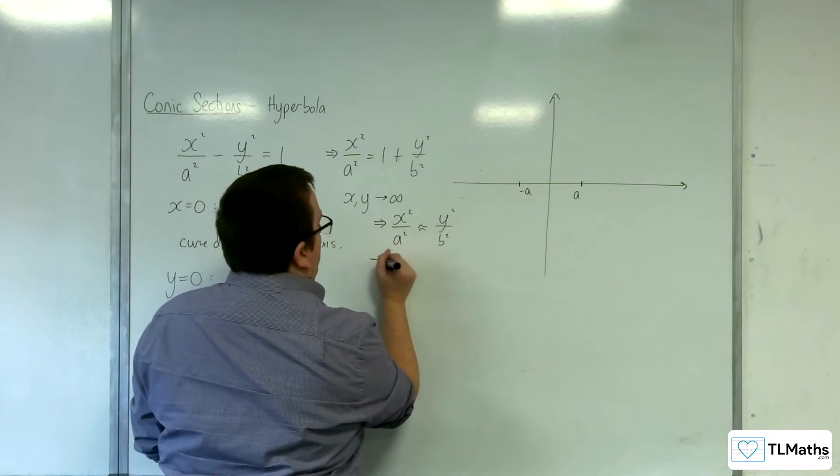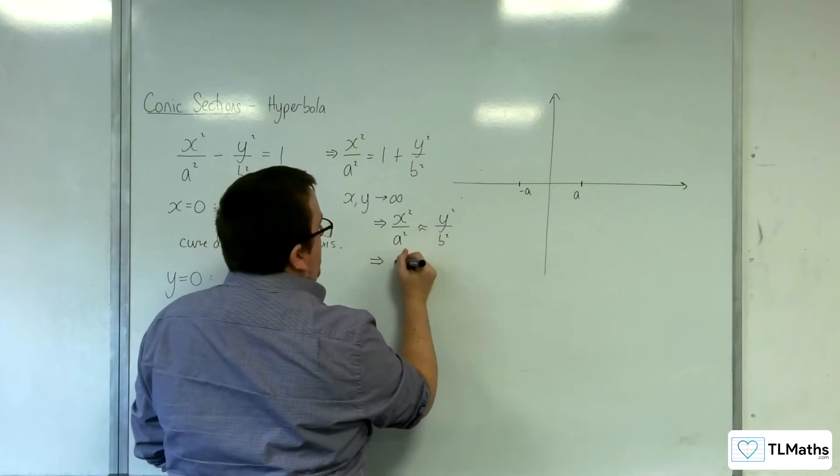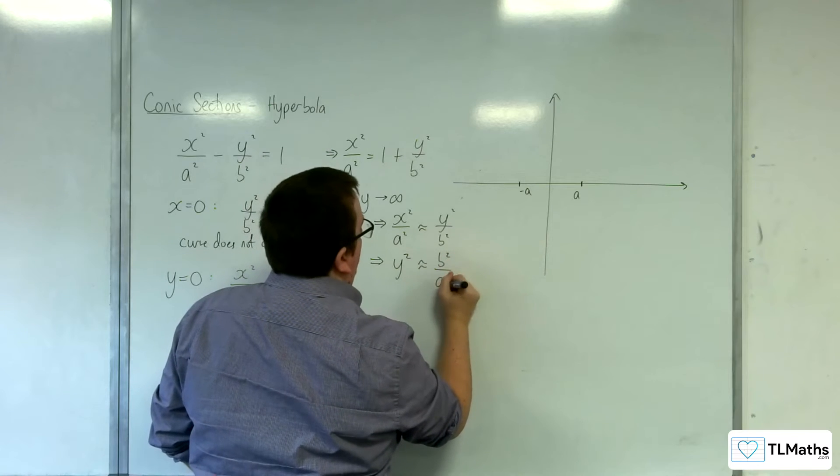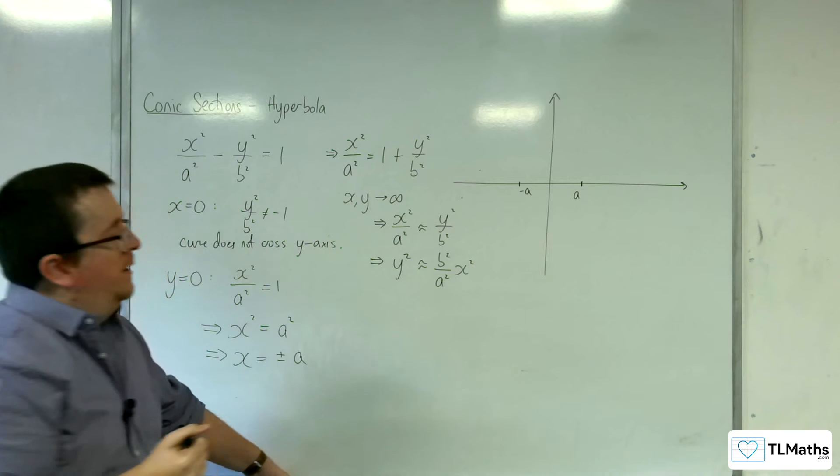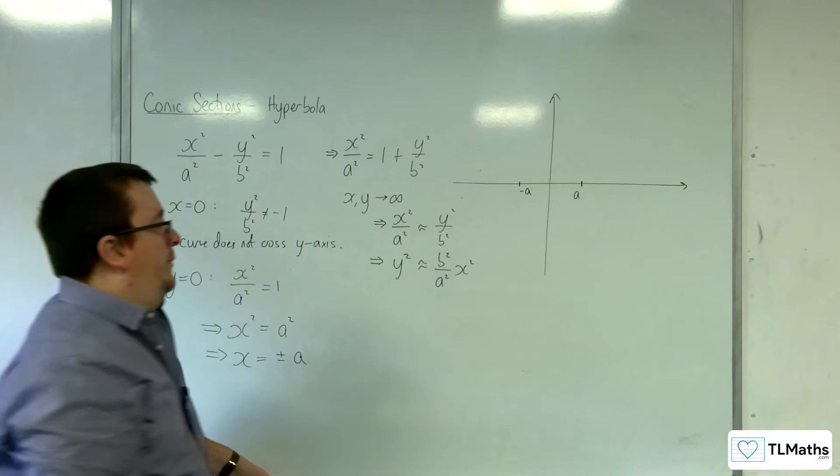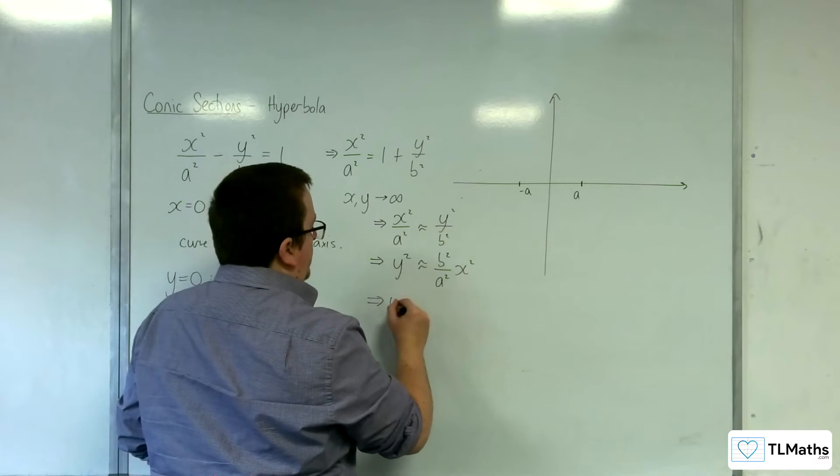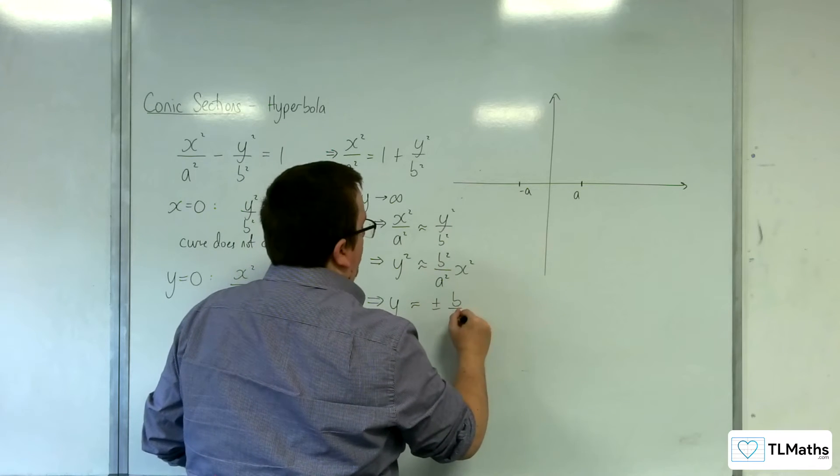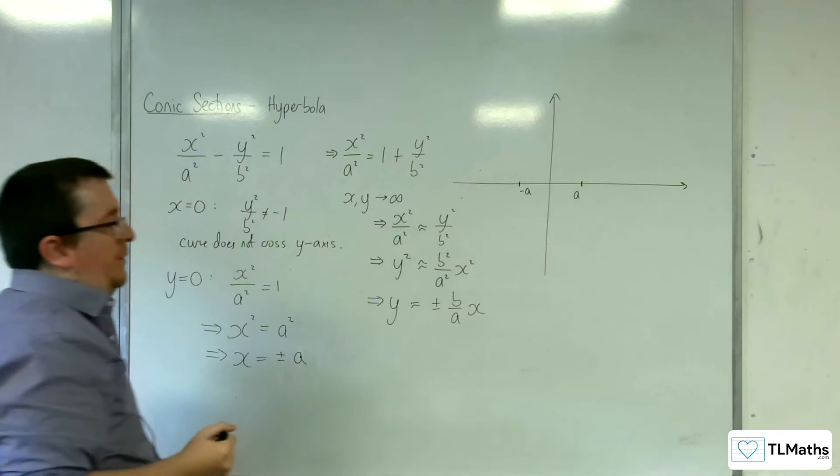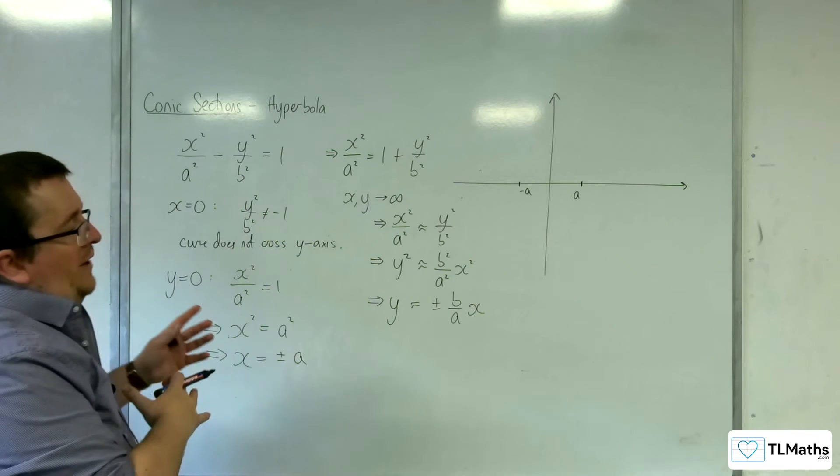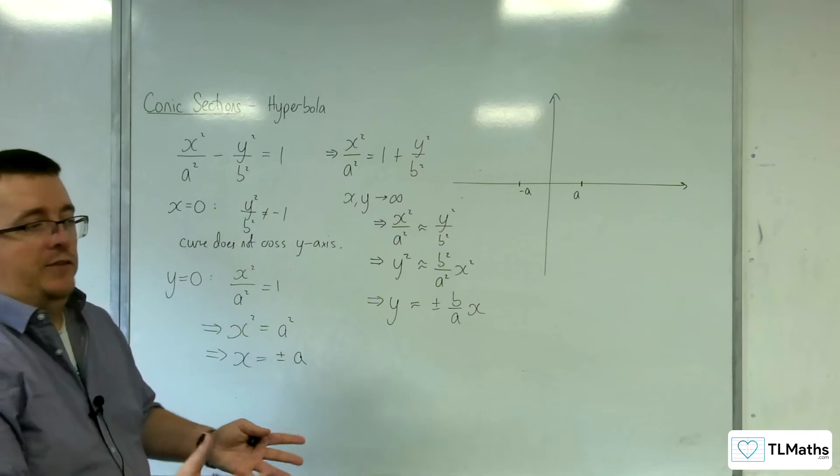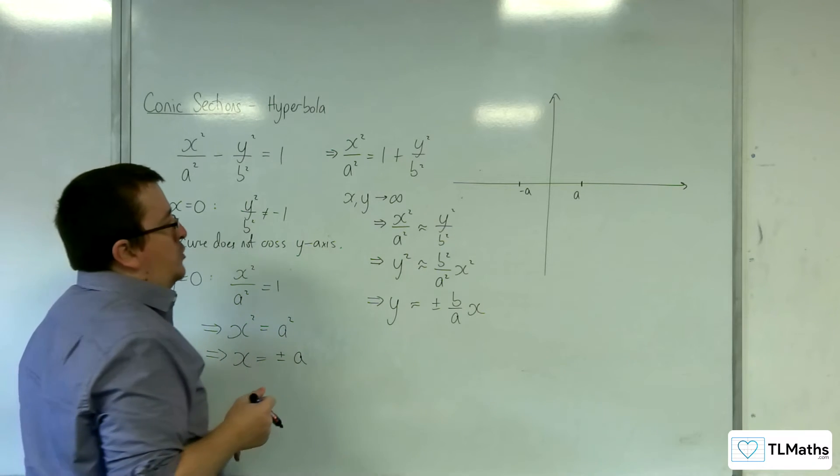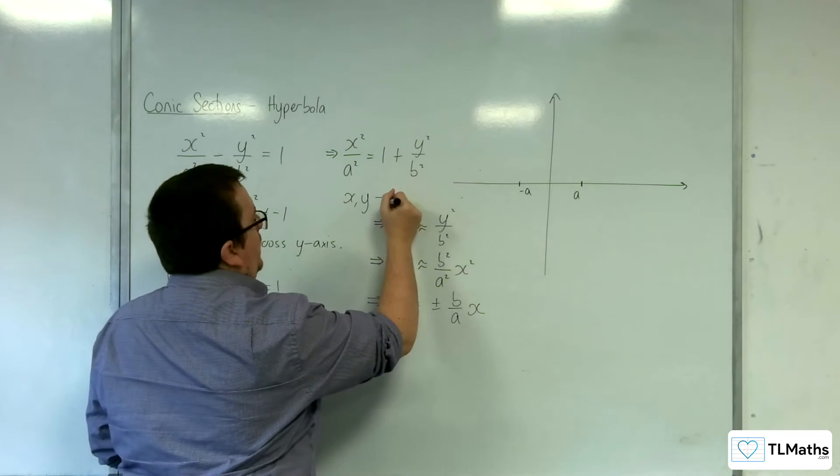So if I multiply up by the b squared and rewrite this as y squared is approximately b squared over a squared x squared, then I can square root both sides and say y will be approximately plus or minus b over a times x. So that's what's happening as x gets larger and larger and larger and either the positive or negative, x and y get larger and larger and larger in the positive or negative direction.